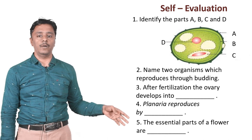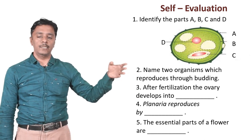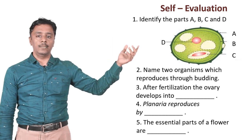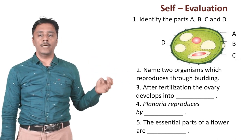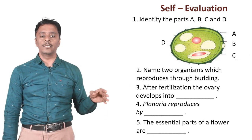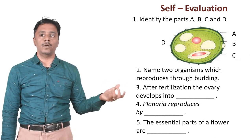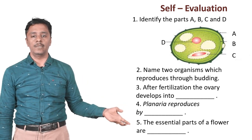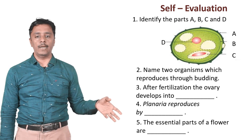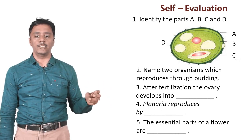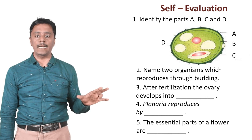The fifth question: what are the essential parts of a flower? The essential parts are stigma, style, ovary, anther, pollen tube, and pollen grains. The non-essential parts are corolla and sepals, which are only for attracting insects and do not take part in reproduction. The essential parts are androecium and gynoecium — these are the two parts which are the essential parts of the flower.